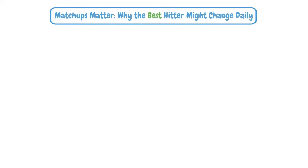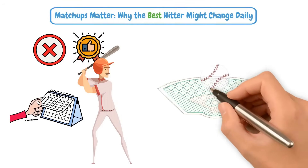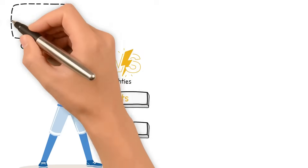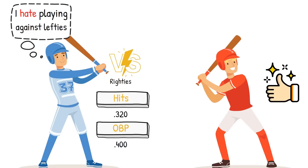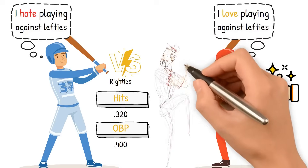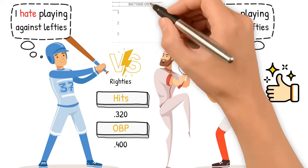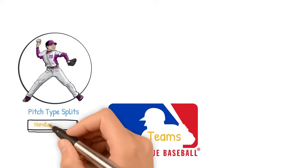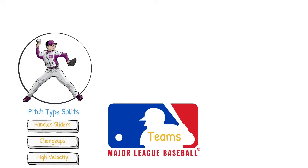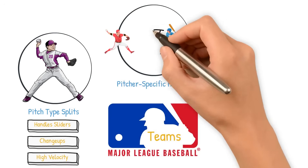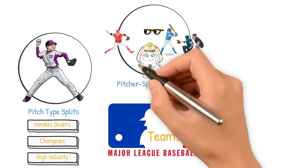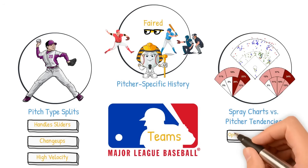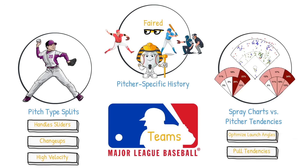But your best hitter might not always be the same best hitter you had yesterday. Baseball isn't played in a vacuum — it's played against matchups. If player A hits .320 with a .400 OBP versus righties but struggles against lefties, and player B is your best hitter against left-handed pitching, then facing a lefty starter tonight, player B may be your best option, maybe even hitting second or third. Teams can go even deeper using pitch-type splits, pitcher-specific history, and spray charts, optimizing each player's ball-in-play tendencies against a certain pitcher.